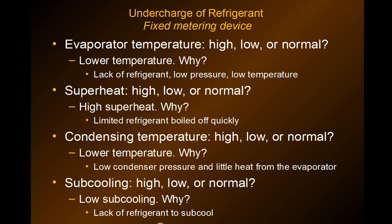The condensing temperatures are going to be lower because of the lower pressure from less refrigerant, and there's not as much heat coming from the evaporator since most heat is absorbed by boiling refrigerant — with less refrigerant, less heat goes out to the condenser. The subcooling will also be lower than normal because there's simply not enough refrigerant in the system to produce any meaningful subcooling.